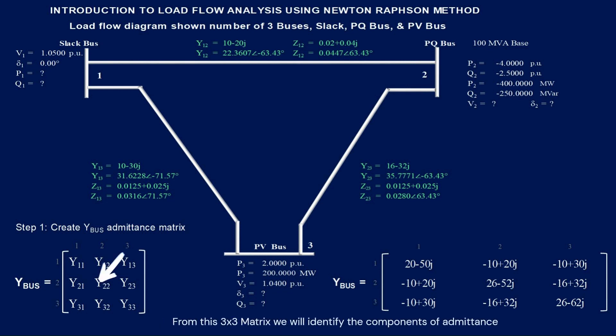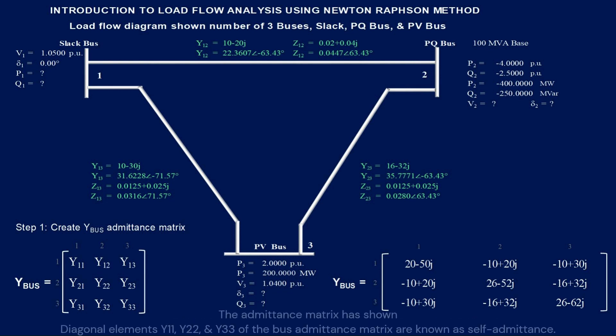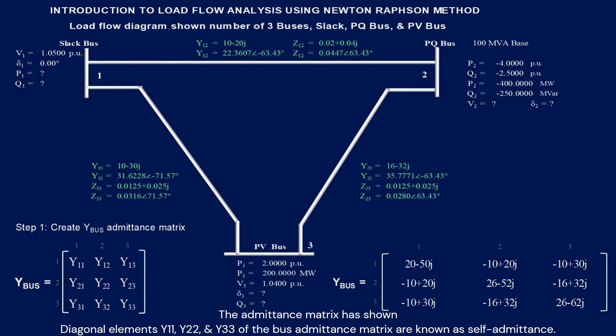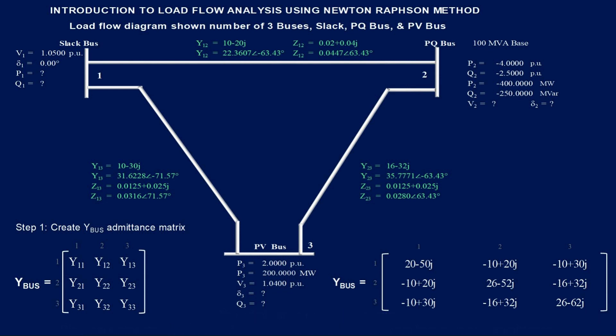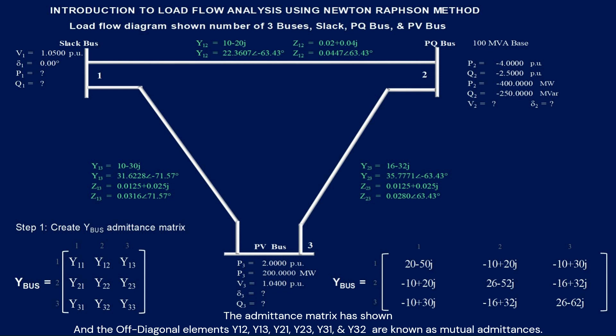From this 3×3 matrix, we will identify the components of admittance. The admittance matrix diagonal elements Y11, Y22, and Y33 are known as self-admittance. The off-diagonal elements Y12, Y13, Y21, Y23, Y31, and Y32 are known as mutual admittances.